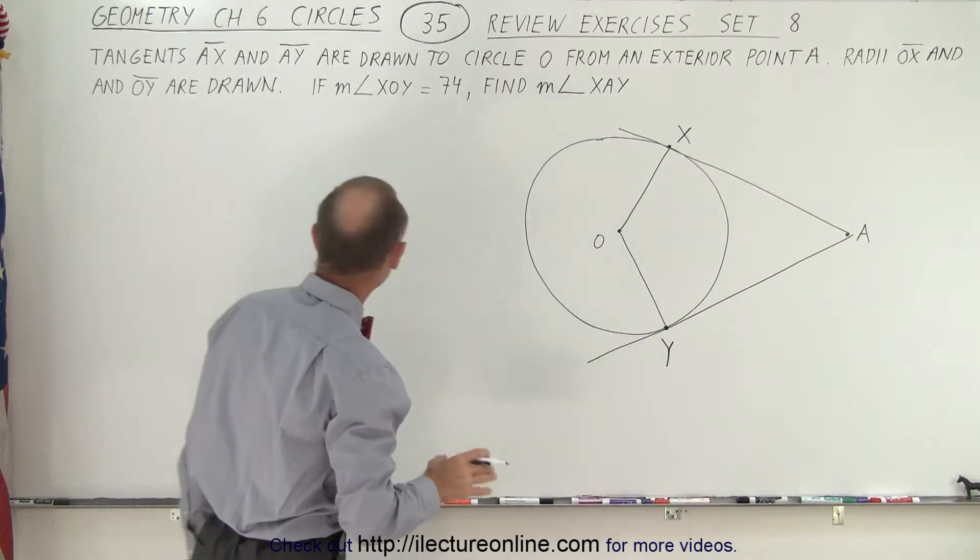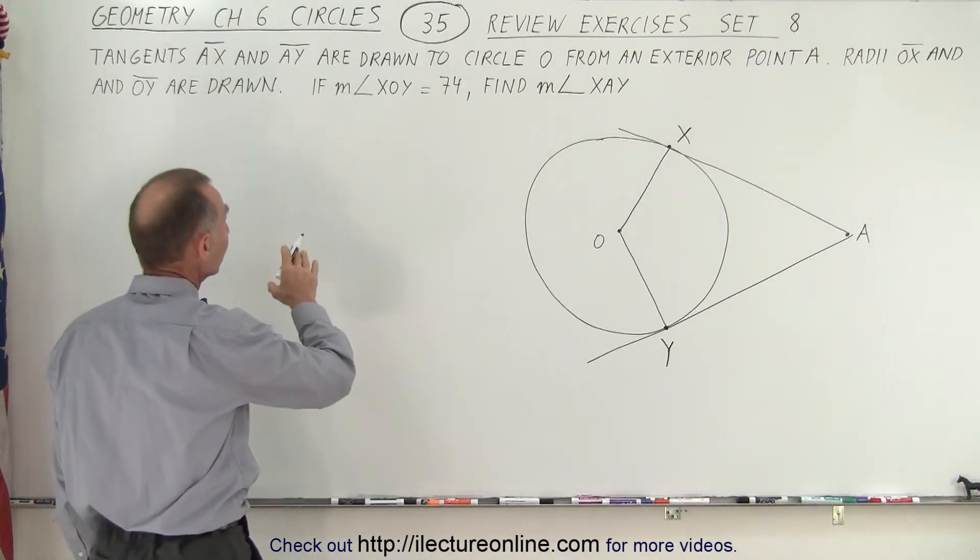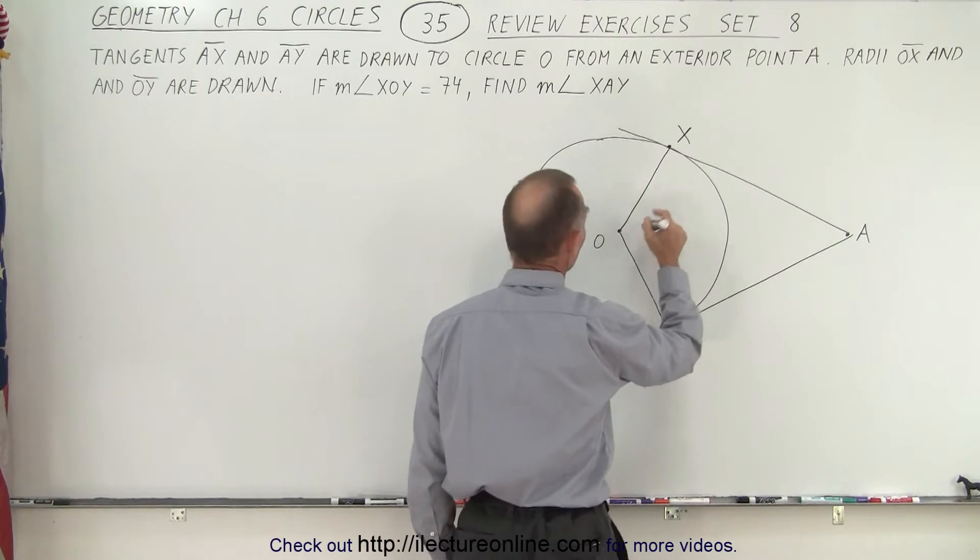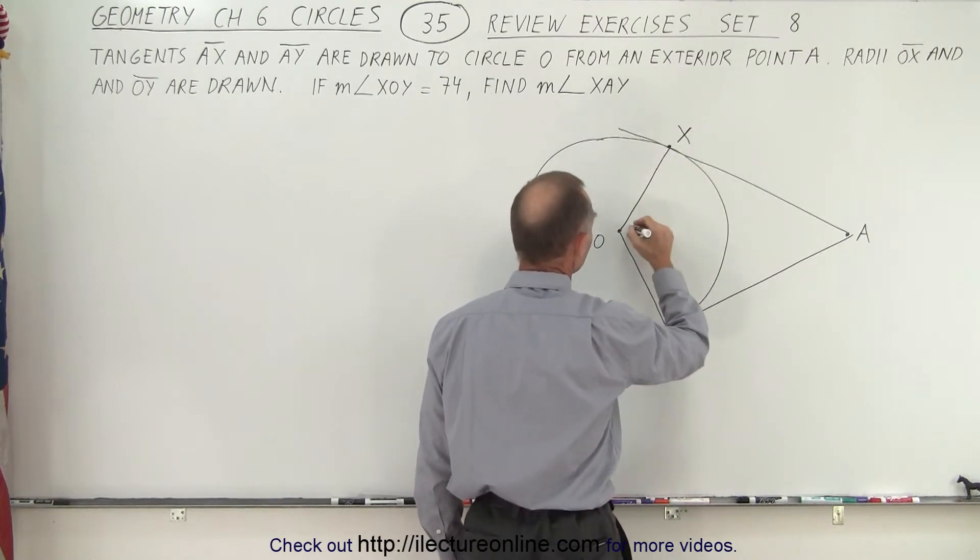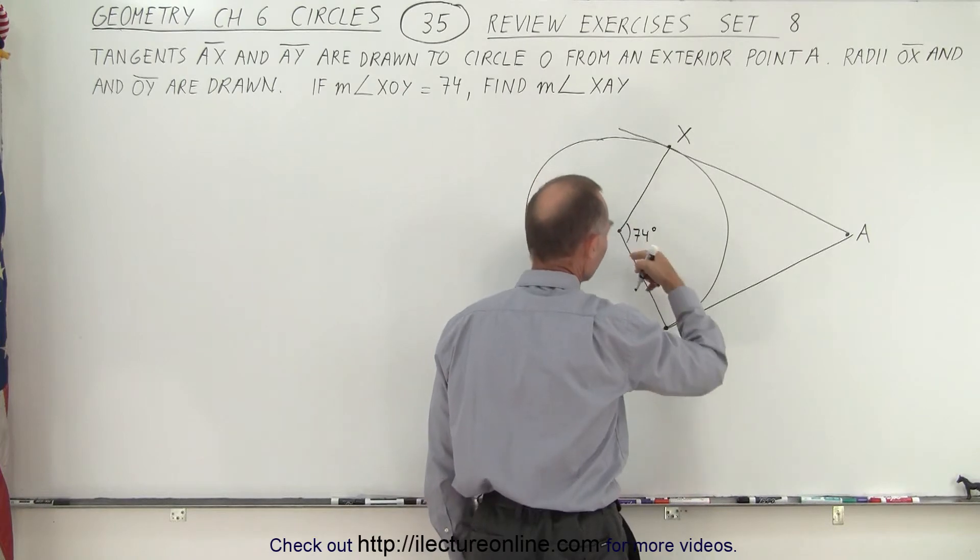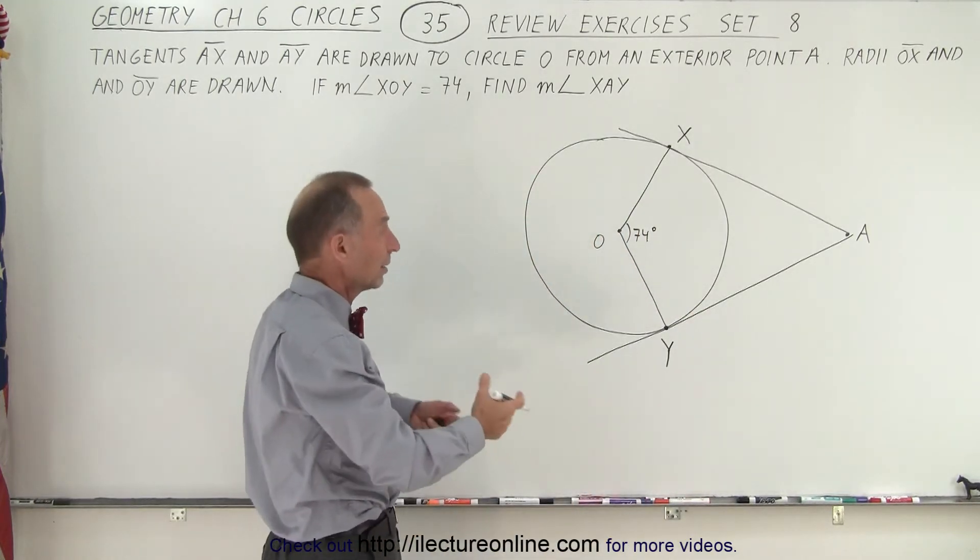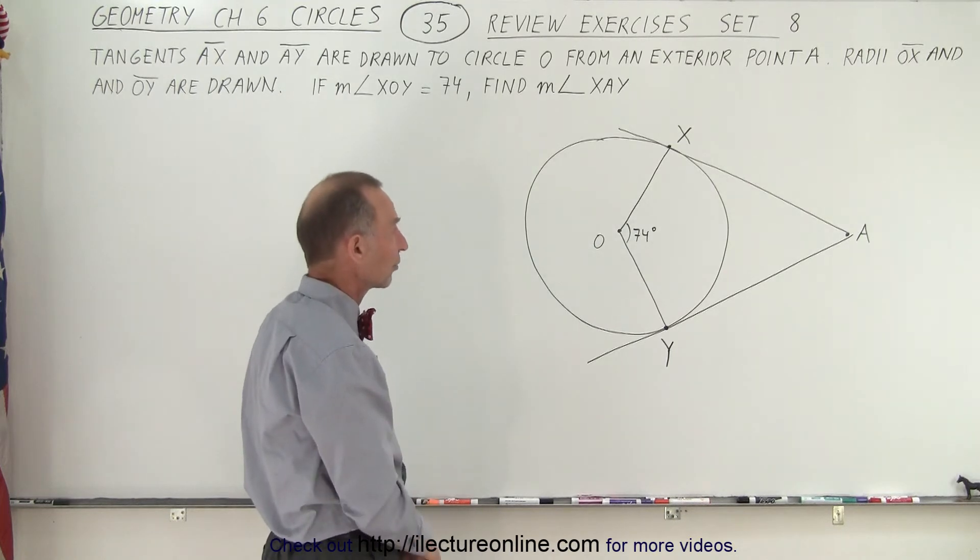And now they give us a clue. They tell us that the measure from XOY is 74. So this measure right here from X to O to Y is equal to 74 degrees. Now notice of course it looks more than 74 degrees, but don't worry about that. It doesn't matter. It gives you the general feel of how to solve the problem.